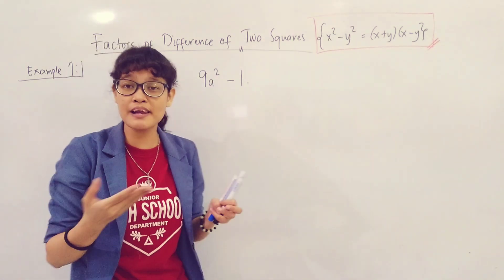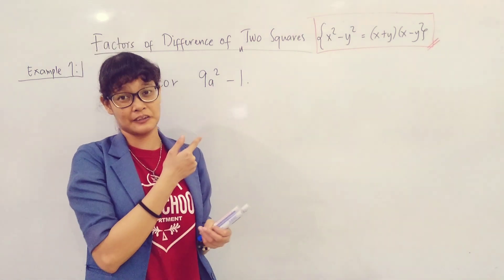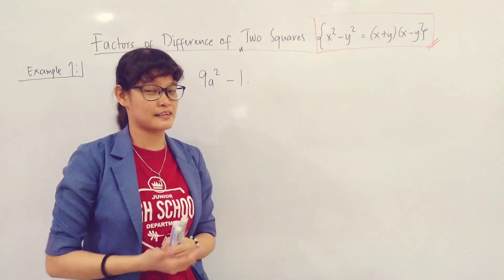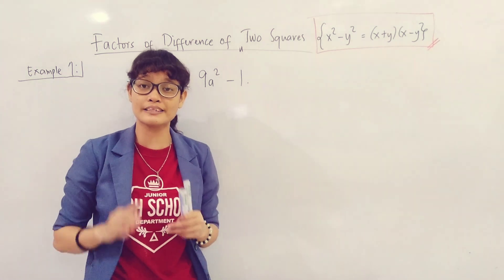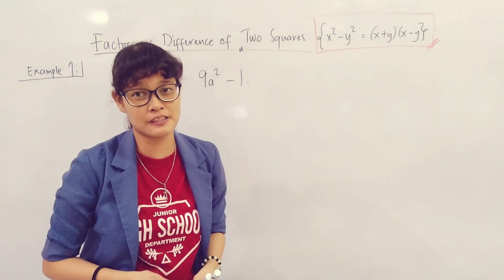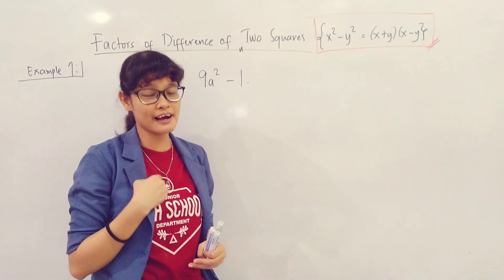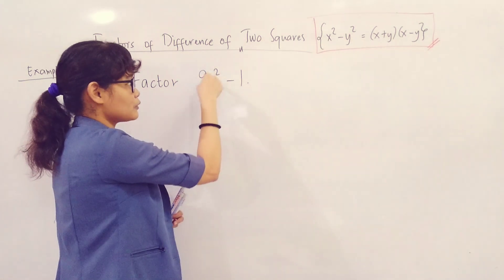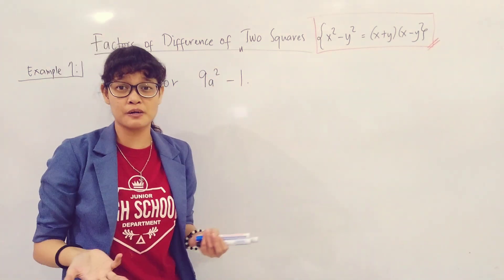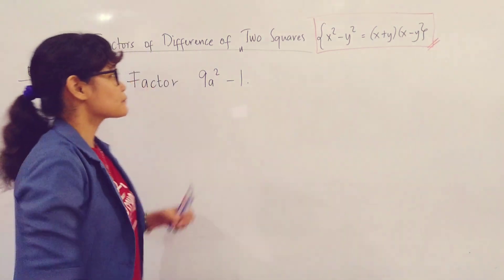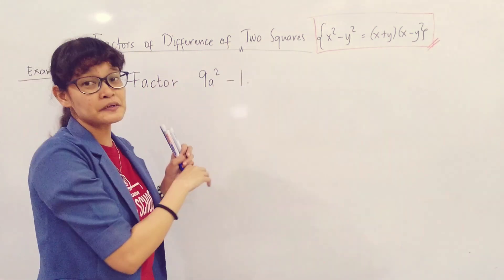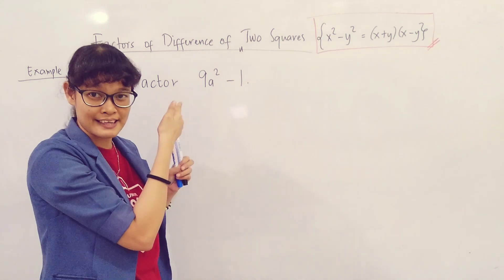9 is a perfect square. Obviously, 1 is a perfect square as well. But how about the variable? How will you know if it's a perfect square? You'll know that the variable is a perfect square when its exponent is divisible by 2. Since 2 is the exponent of a and 2 is divisible by 2, therefore a squared is a perfect square. Now we can proceed to the first step of how to factor DTS.